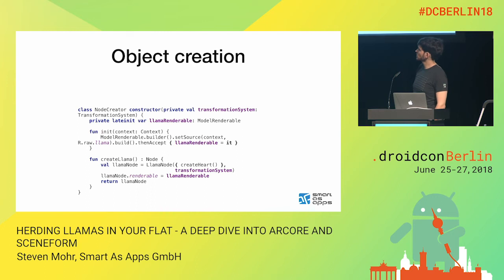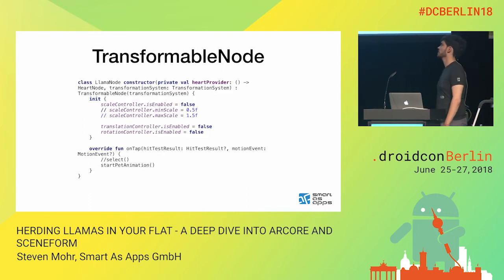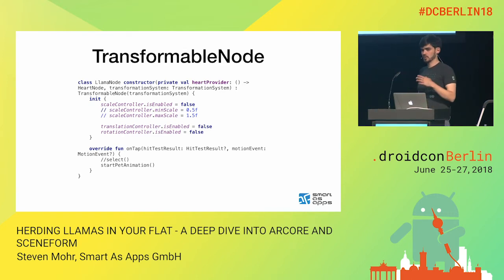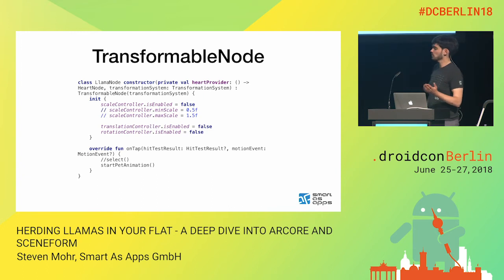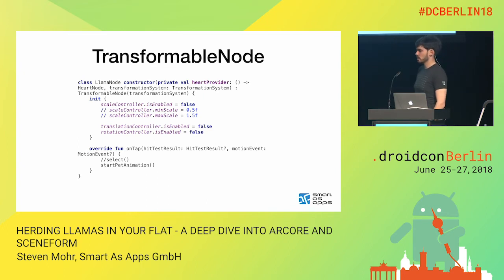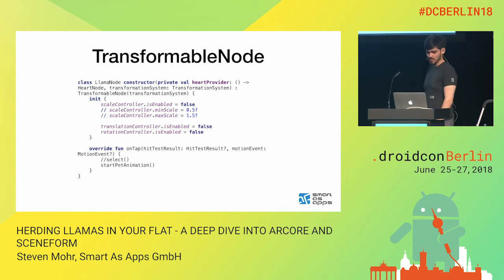Then we create a node with this renderable — also just two lines of code. You might wonder what a TransformationSystem is. That's something provided by the AR Fragment, giving you support for all the standard gestures. We use a llama node that is a subclass of TransformableNode. With TransformableNode you get a scale controller, translation controller, and rotation controller which you can configure. For example, for the scale controller you can set a minimum and maximum scale so things don't get too big or too small. For the llama, we disable scaling, translation, and rotation since they will move on their own.